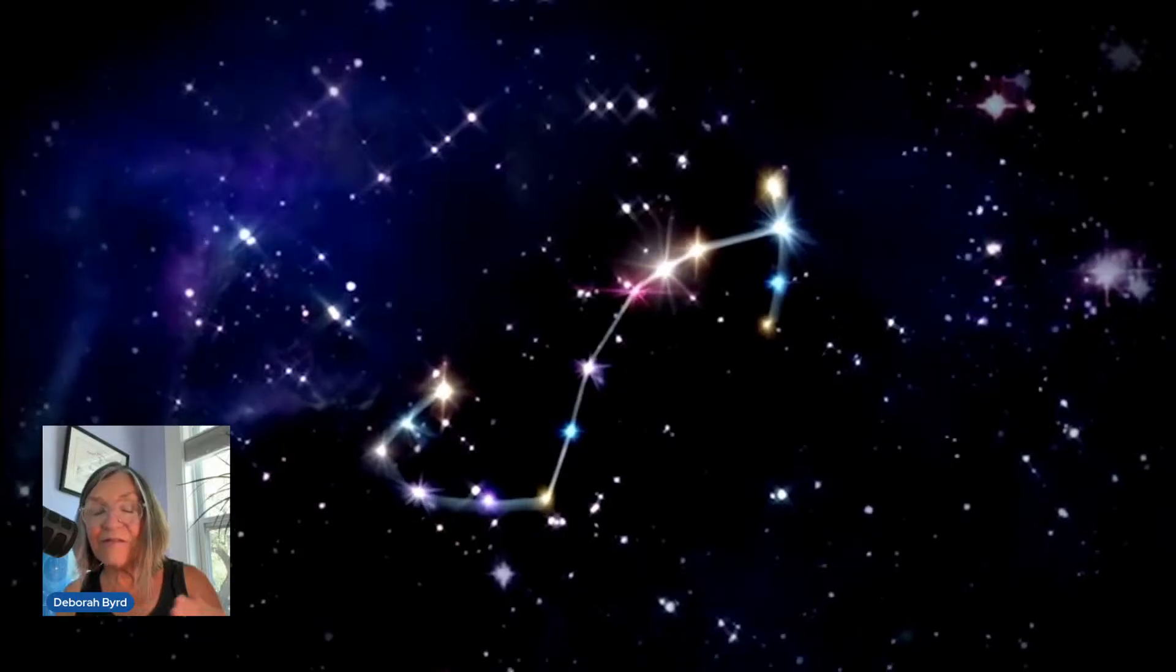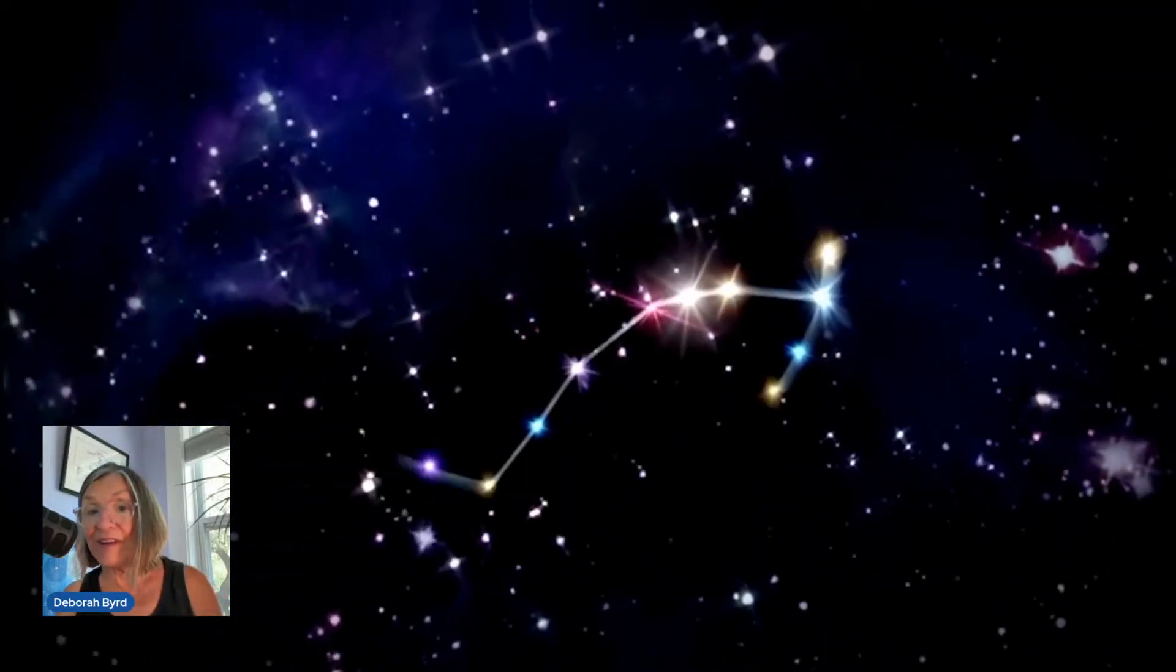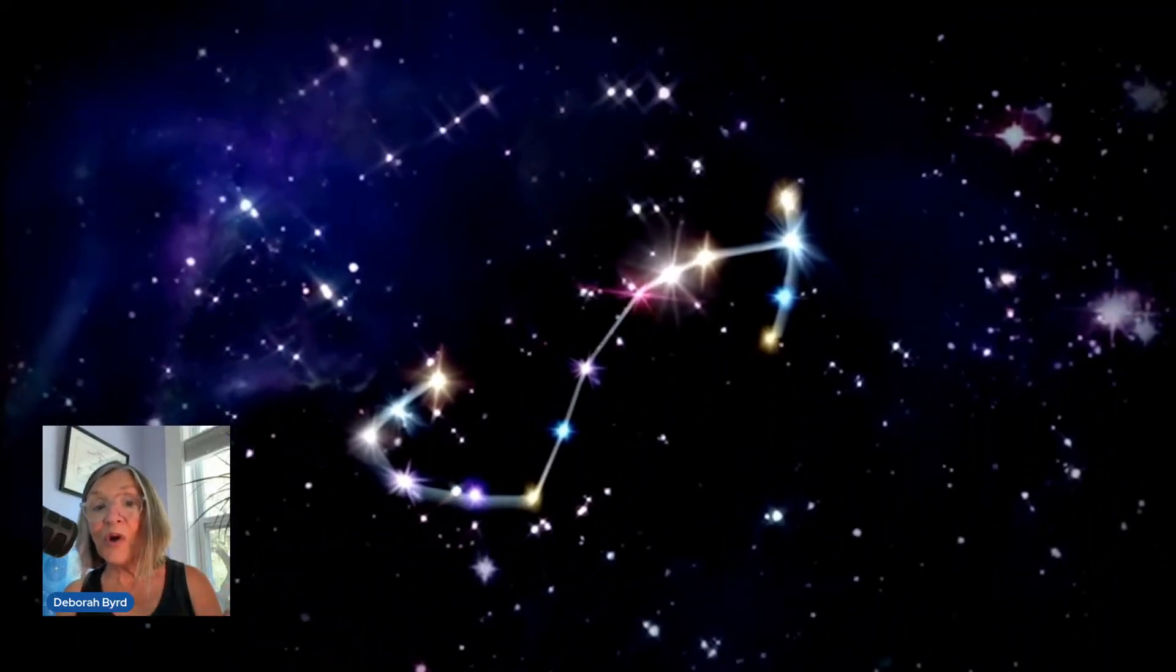Scorpius is easy to find on July and August evenings. From the northern hemisphere, look southward each evening. From the southern hemisphere, look overhead.